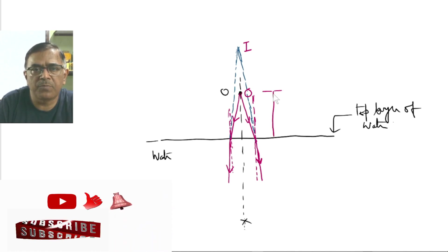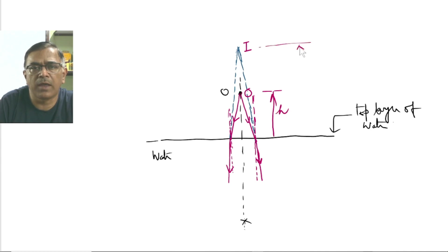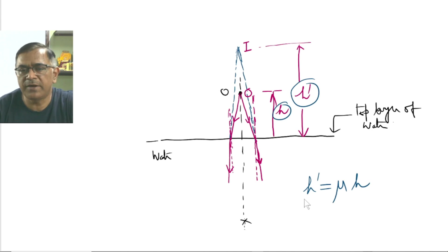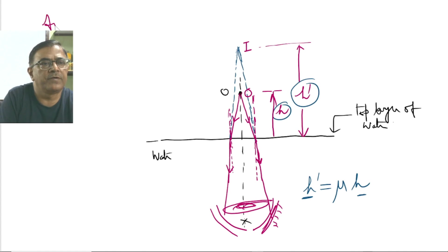So for this object, this should be the position of image. Here, this happens to be the real height. And this is the apparent height, h dash. The relation between h dash and h is given by h dash is equal to mu times h. This is apparent height. And this is the real height. Extend these two rays as well. Now you can draw the eye of Rhea. So this is answer D.